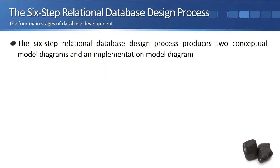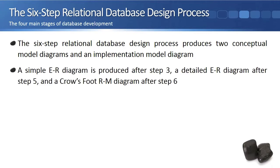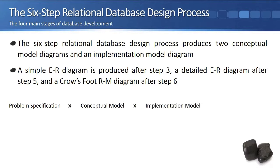The six-step relational database design process produces two conceptual model diagrams and an implementation model diagram. A simple ER diagram is produced after step three, a detailed ER diagram after step five, and a crows-foot RM diagram after step six. Thus, six-step relational database design is fully compatible with the four stages of database design and development.